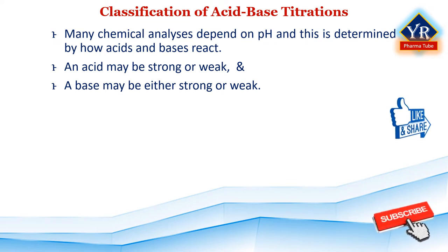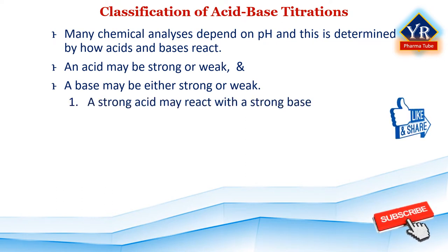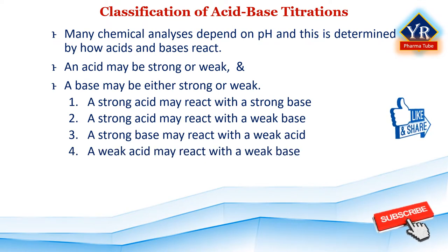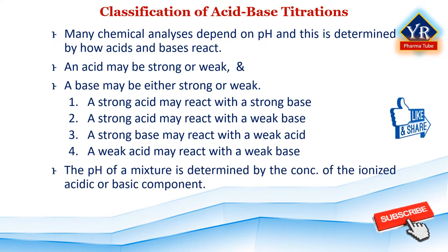Many chemical analyses depend on pH, and this in turn is often determined by how acids or bases interact or react. An acid may be considered strong or weak, and similarly a base may be either strong or weak. Therefore, we can classify acid-base titrations into four types: (1) strong acid reacting with strong base, (2) strong acid reacting with weak base, (3) strong base reacting with weak acid, and (4) weak acid reacting with weak base.